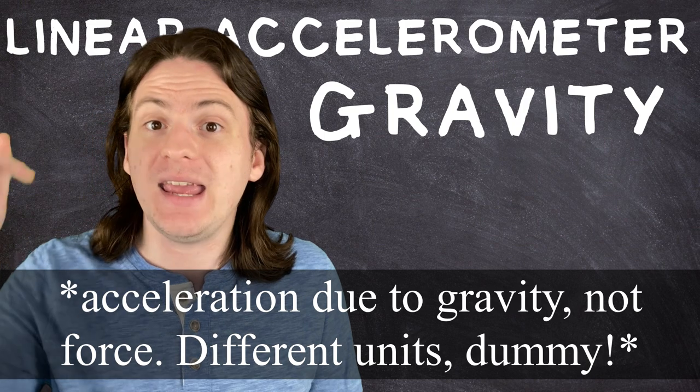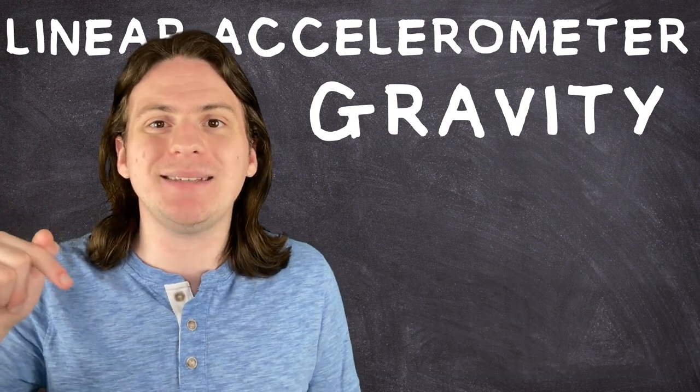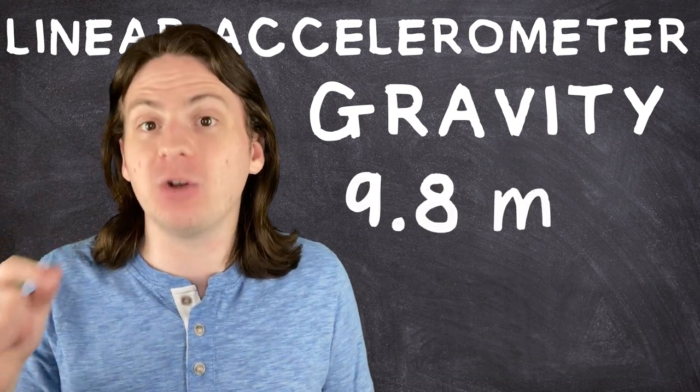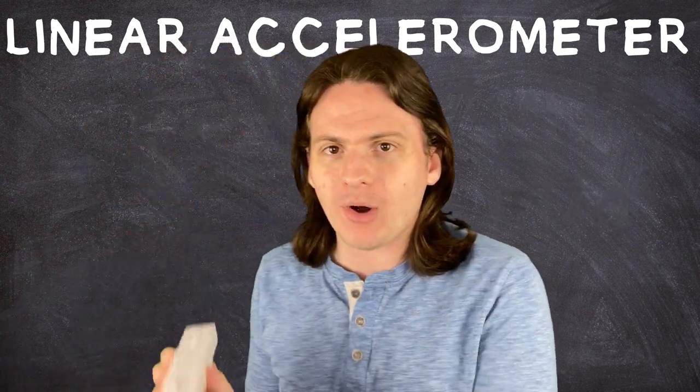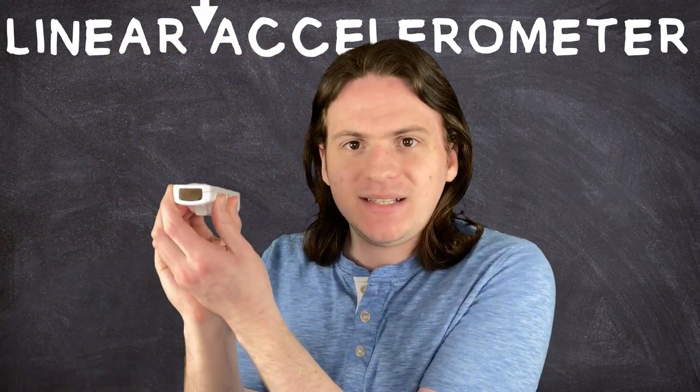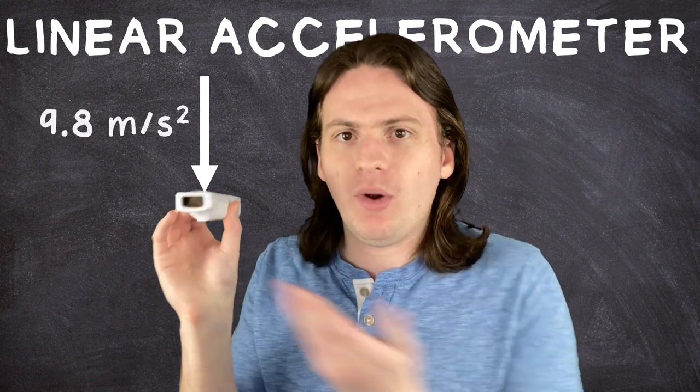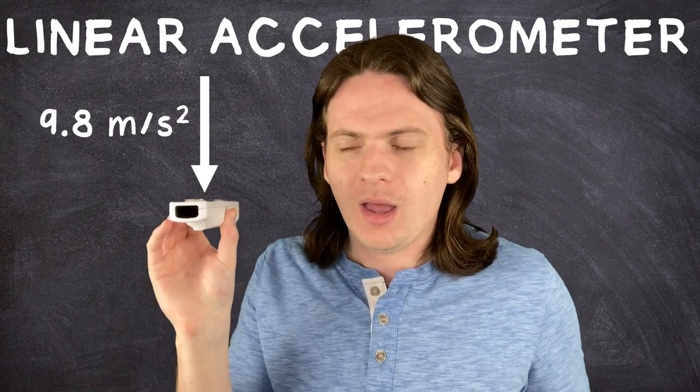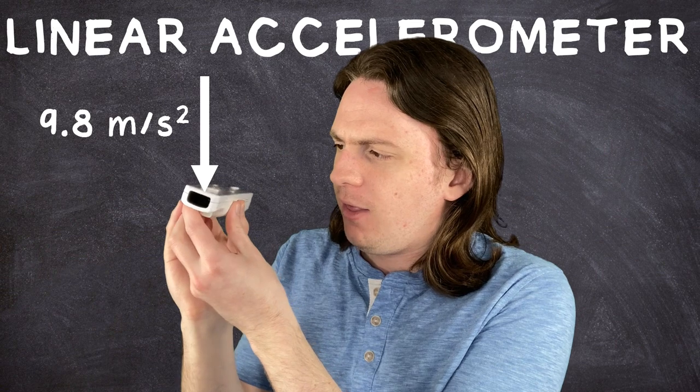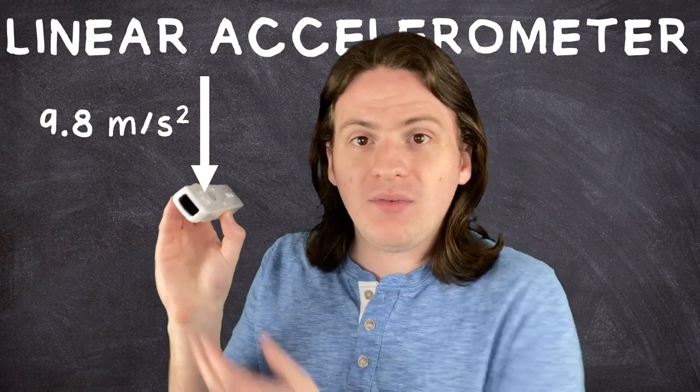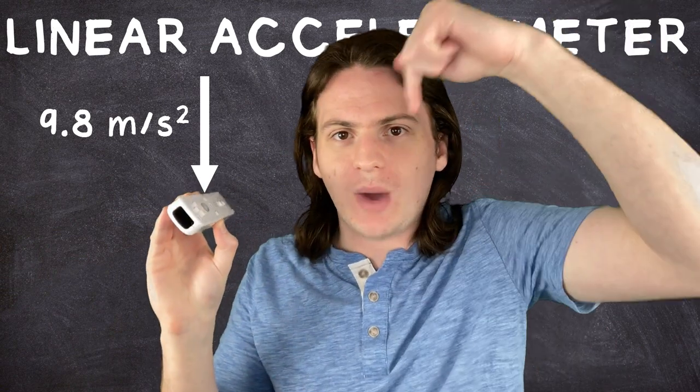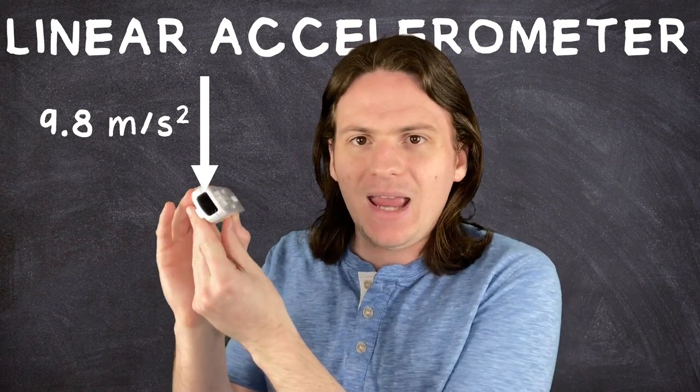Now, the force of gravity here on Earth is always a constant 9.8 meters per second squared. So, if you held an accelerometer out like this, it would sense an acceleration of 9.8 meters per second squared. But what if you did this? Gravity always acts straight down, but now our accelerometer is at an angle.